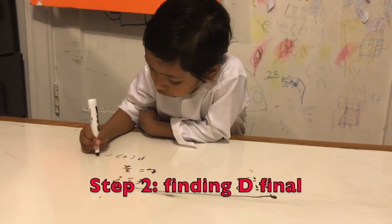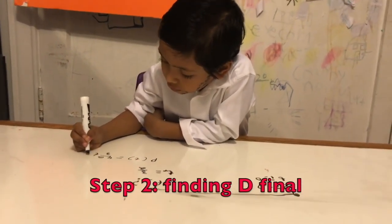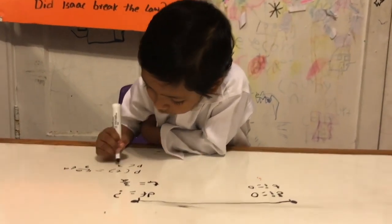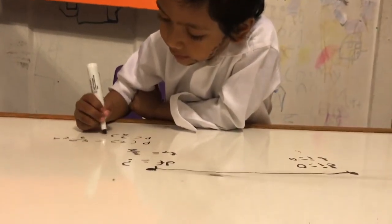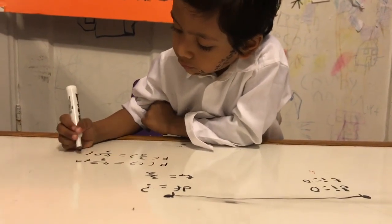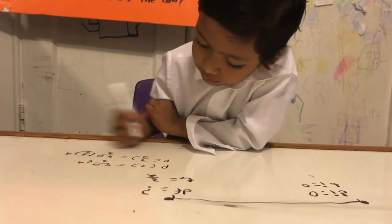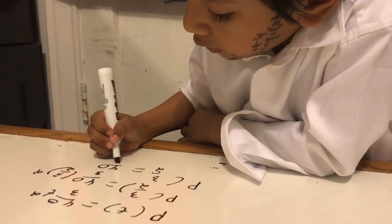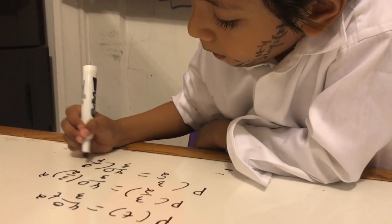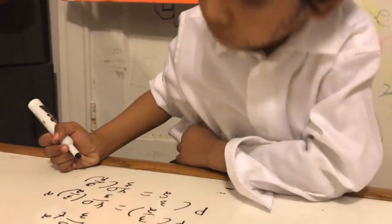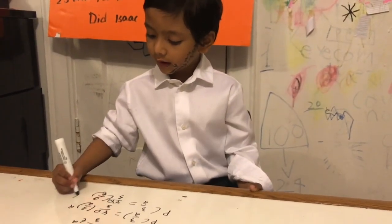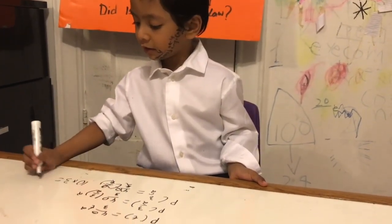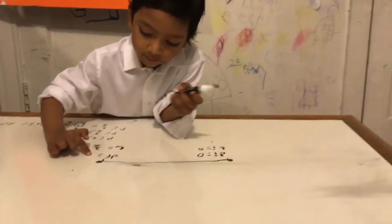P of T is equal to 40 over 3 T squared. So we replace all the T's with 3 over 2. P of 3 over 2 is equal to 40 over 3 times (3 over 2) squared, which equals 40 over (9 over 4). So 4 goes into 40 ten times, and 10 times 3 equals 30. So D final equals 30.